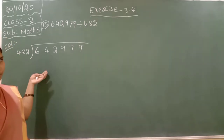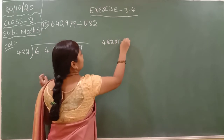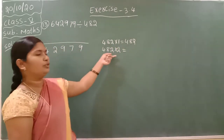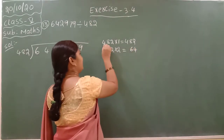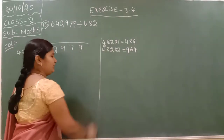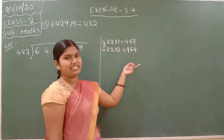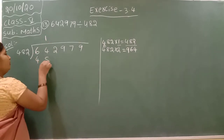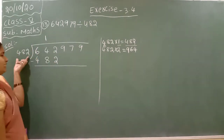First, you have to write down the 482 table. 482 ones are 482. 482 twos — you have to multiply 2 to all these numbers: 2 fours are 8, 2 eights are 16 — write 6 here and carry 1. 2 fours are 8, 8 plus 1 is 9. Now check our numbers — here they gave 642, but here we are getting 964, which is the bigger number. So you have to take 482 ones, which is 482.